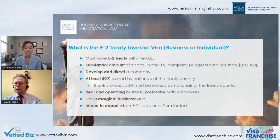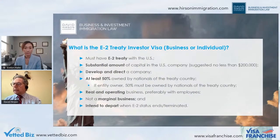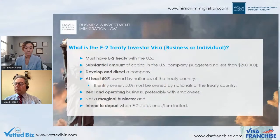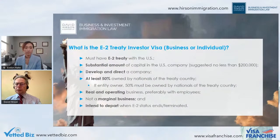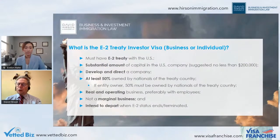The E2 visa allows the individual to come into the US quickly to work in the enterprise. The spouse can get a work permit, and the spouse and children under 21 who are unmarried can attend any school. The capital has to be substantial — we recommend approximately $200,000. The individual must come to develop and direct the company, and the treaty country owner must have at least 50% ownership in the entity.